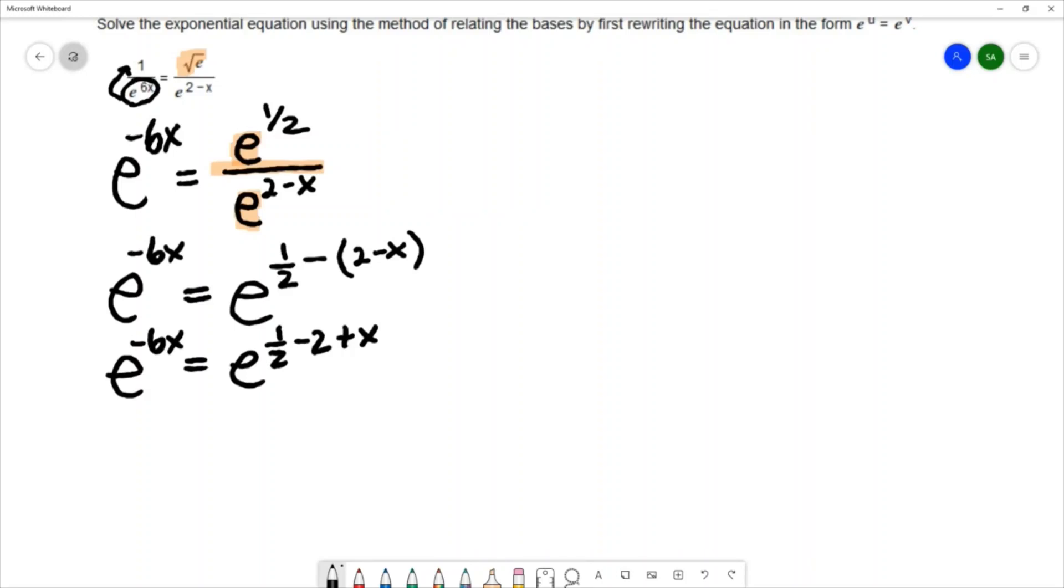I can now say that I've written both sides of the equation with the same base, and by the relating the bases method and the one-to-one property these exponents must be equal to each other.